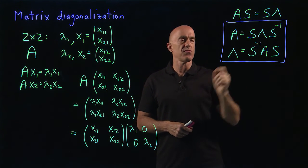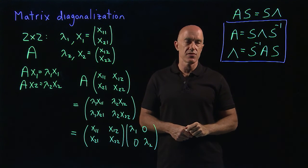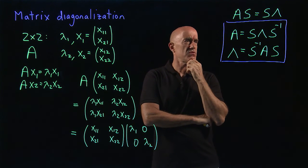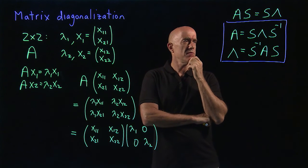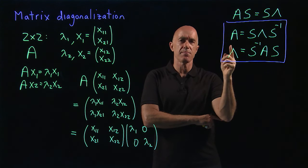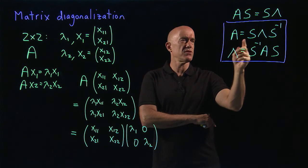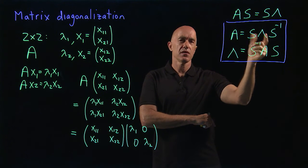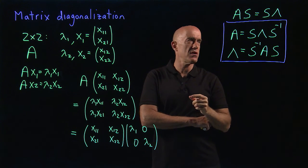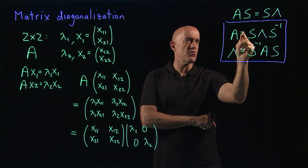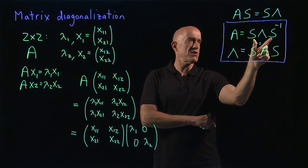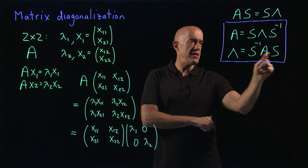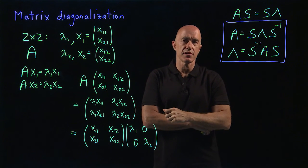In the second relationship, lambda equals S inverse A S, we say we have diagonalized the matrix A by multiplying by the eigenvector matrix on the right and its inverse on the left. The first expression is a factorization of A into the product of three matrices where the middle matrix is diagonal. Both results are important. To remember them, note that A must be multiplied on the right by the eigenvectors — the matrix S. So you know you have an S and an S inverse. If you remember that AS equals S lambda, you can always recover the correct order.